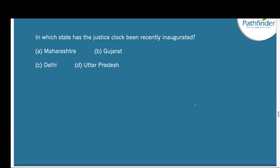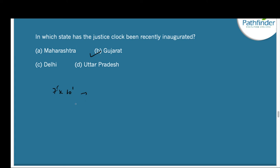Next question: In which state has the Justice Clock recently been inaugurated? The options are Maharashtra, Gujarat, Delhi, and UP. The correct answer is Gujarat. The Justice Clock is a new measure introduced by the Gujarat High Court to encourage transparency and openness in court operations. It is a 7-feet by 10-feet LED display at the court premises showing how many cases are pending and how many are registered on a particular day. The first Justice Clock in India was inaugurated in Odisha, the second in Calcutta, and this is the third.